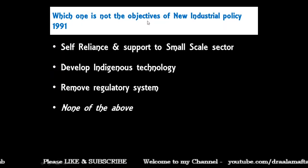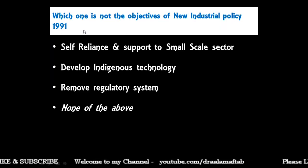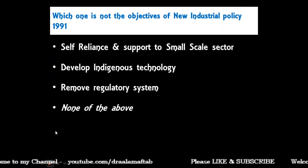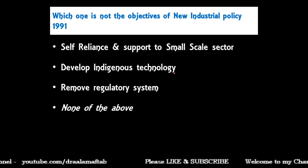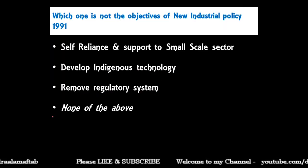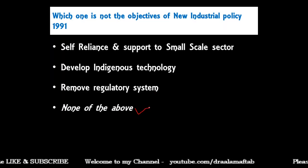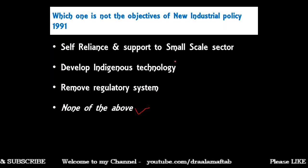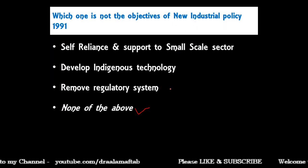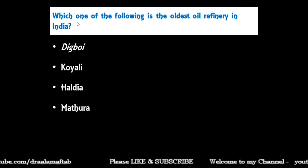Which one is not an objective of the New Industrial Policy 1991: self-reliance and support to small scale sector; develop indigenous technology; remove regulatory system; or none of the above? The correct answer is none of the above, because all of the above were objectives of the New Industrial Policy 1991.